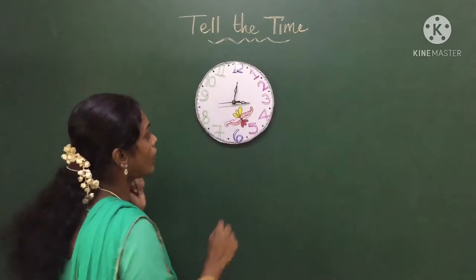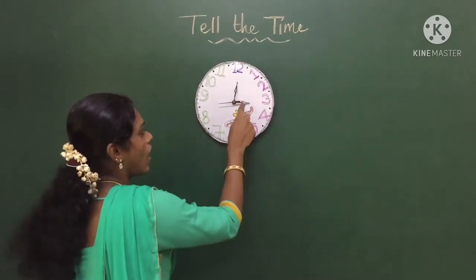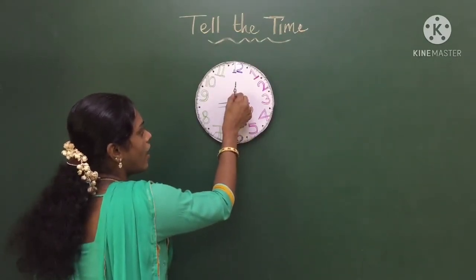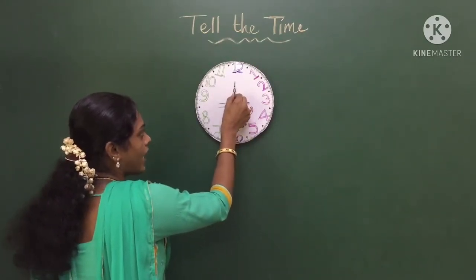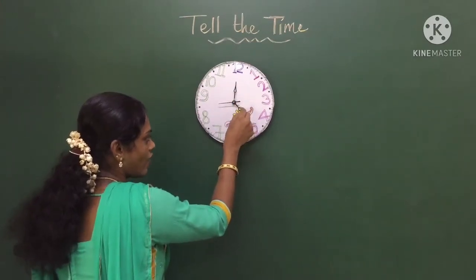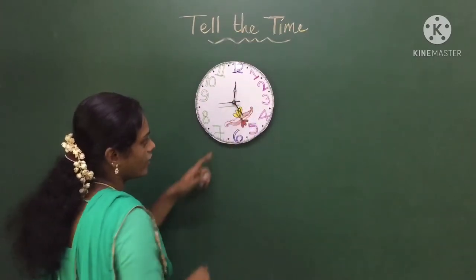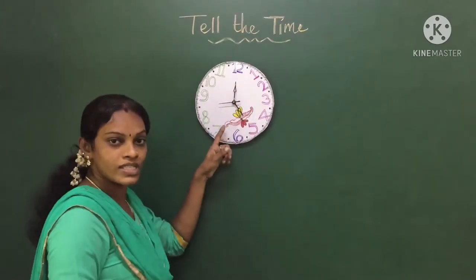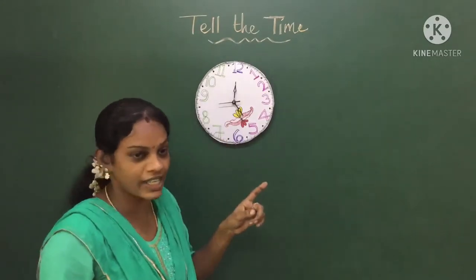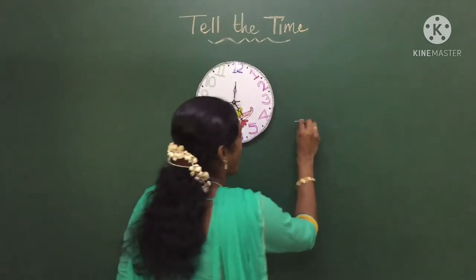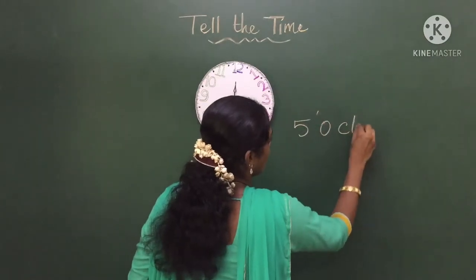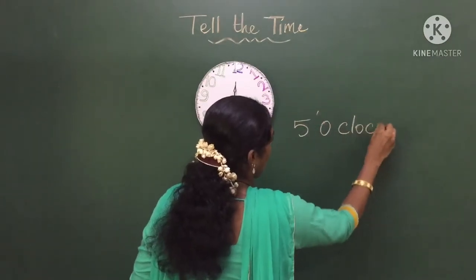Now let us see how the hours work. Here you can see when the minute hand is at twelve and the hour hand is at five — now what is the time? It is five o'clock.